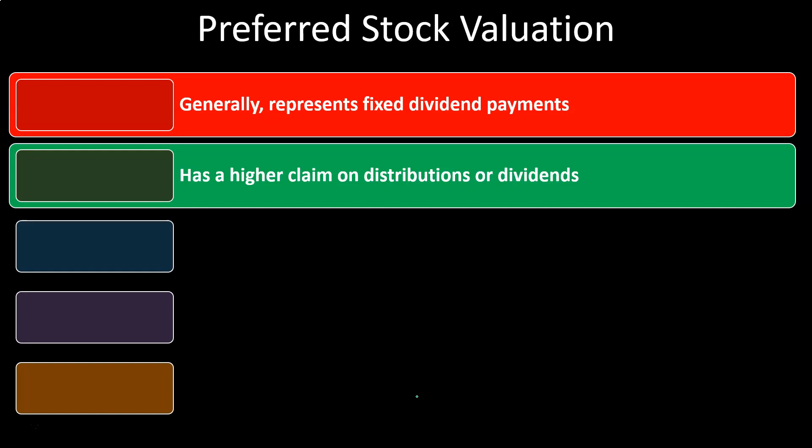Preferred stock has a higher claim to distributions or dividends. The benefit of preferred stock is typically that preferred stockholders get paid first on dividends, which makes it much more likely that dividends go out to them. Most of the time, you have to pay preferred stockholders before common stockholders receive any dividends. That's what makes them preferred.